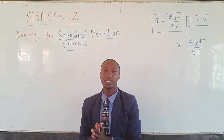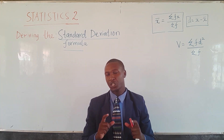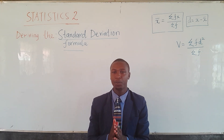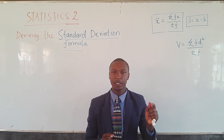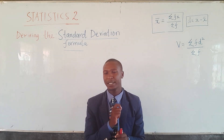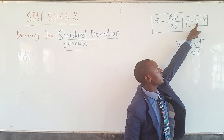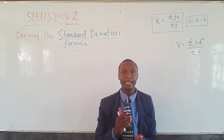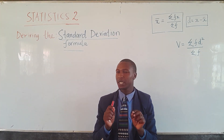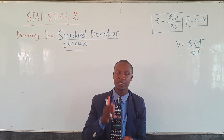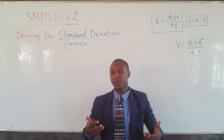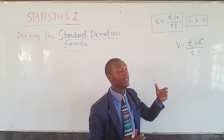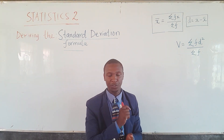Assuming we have a set of data, each class will be represented by its midpoint. We take the class boundaries, add them, and find the average. All these averages will be called x, and x-bar is the assumed mean. We then find how each midpoint is deviating from the mean we have chosen.